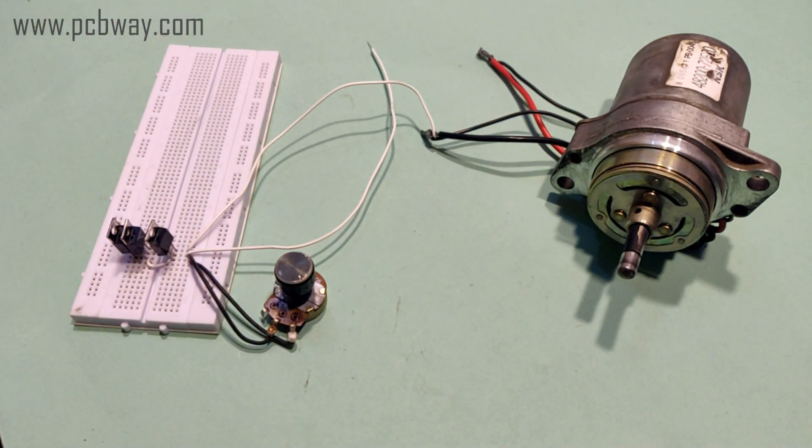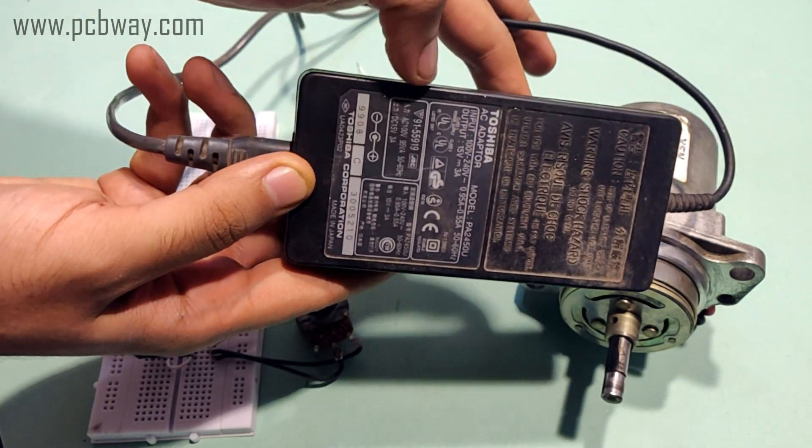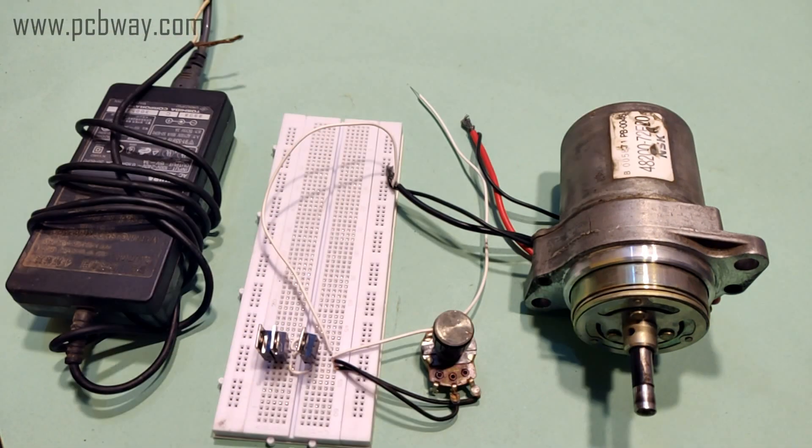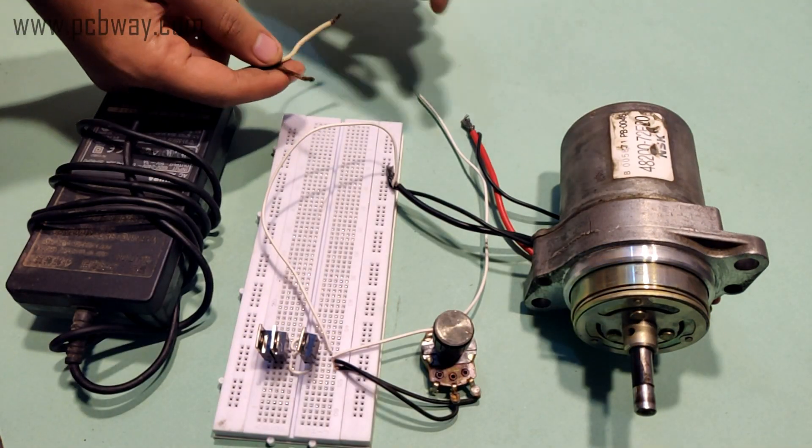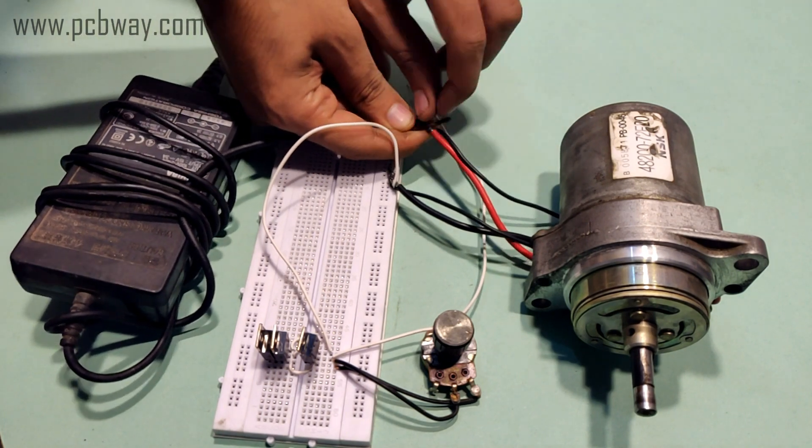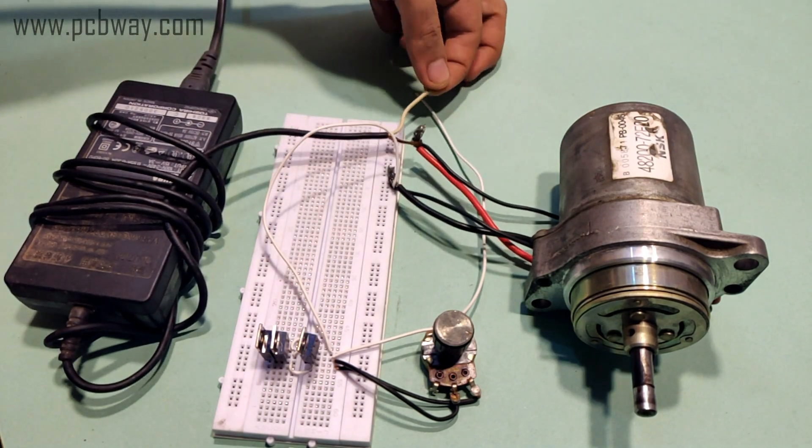As you can see, I'm using a laptop charger rated at 15V DC to operate this circuit and the DC motor. Even though the laptop charger indicates 3 amperes, the circuit is capable of handling current between 5 to 10 amperes, and the motor I'm using is rated at 15 amperes DC.